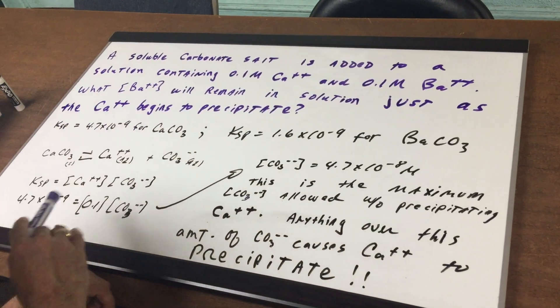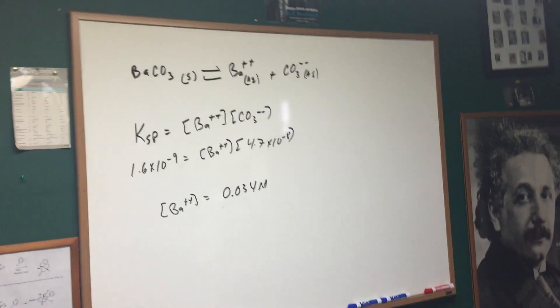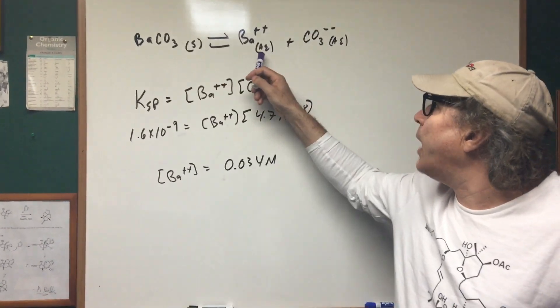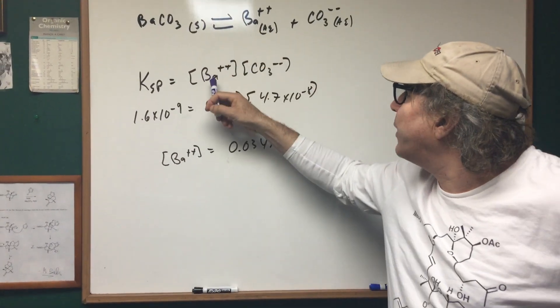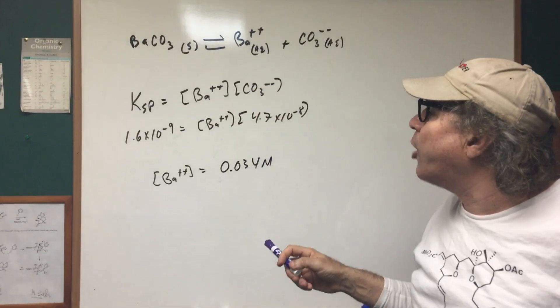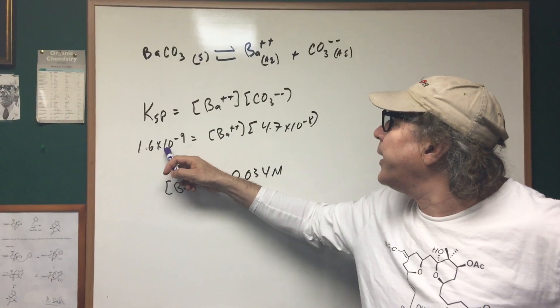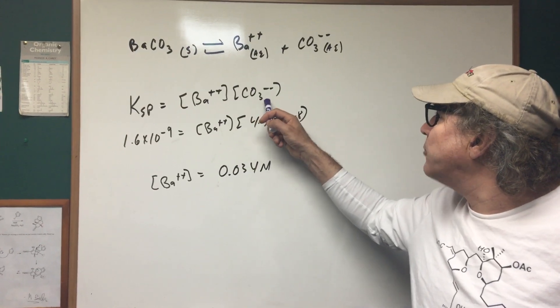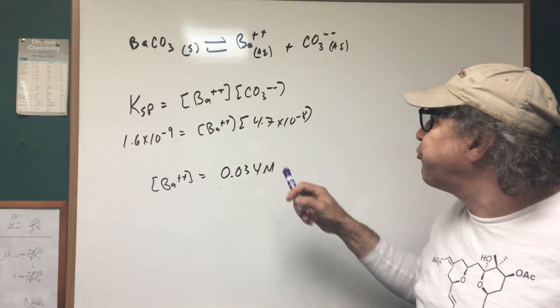But here we want barium. So let's swing over to the board and finish it out. They're asking me for the barium. So we're going to write barium carbonate. The KSP would be the concentration of barium times carbonate. We know the KSP. I gave it to you for the barium carbonate. We know the amount of carbonate from the previous discussion.